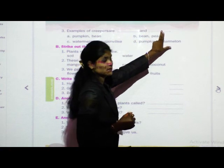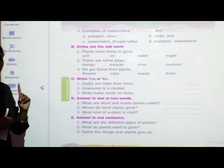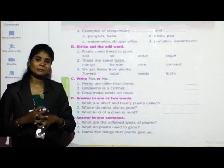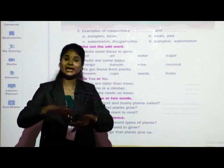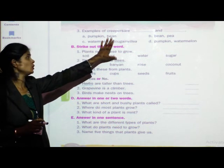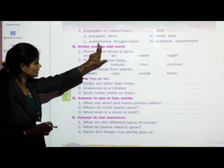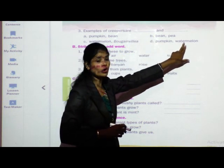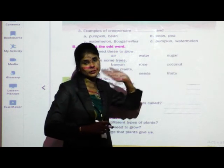Third question: examples of creepers are blank and blank. Creepers are plants which creep on the ground — they spread on the ground. The options are pumpkin and bean, bean and pea, watermelon and bougainvillea, and pumpkin and watermelon. Pumpkin and watermelon are the examples of creepers.